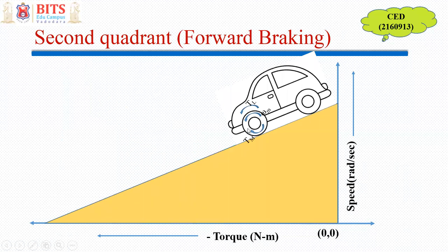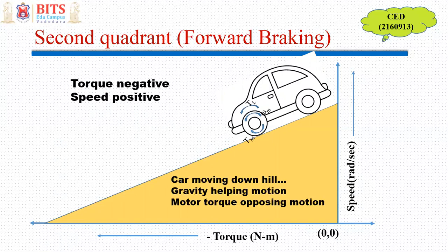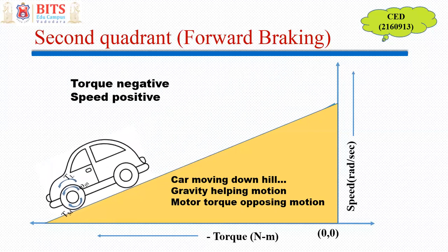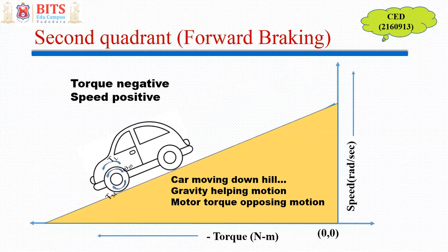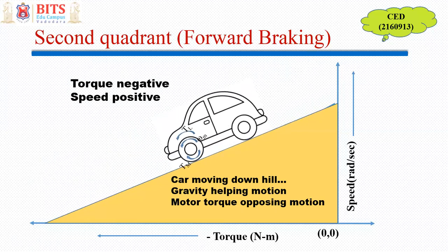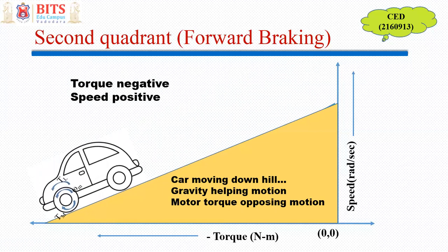In the second quadrant, the same car is moving downhill. The direction of rotation remains anticlockwise, but now gravity is pulling the car in the same direction as motion, so load torque acts in the direction of rotation. The motor develops torque to oppose this motion — it applies braking to control the dangerously high speed that would otherwise result. So when the motor opposes forward motion, it is called forward braking. Here, load is supporting the motion and motor torque is controlling the dangerous high speed.